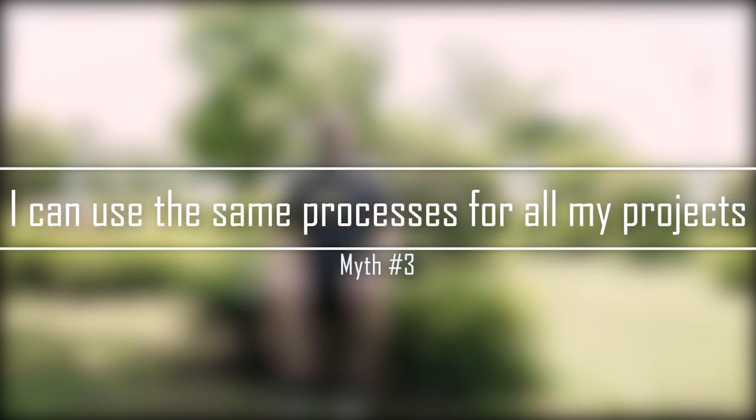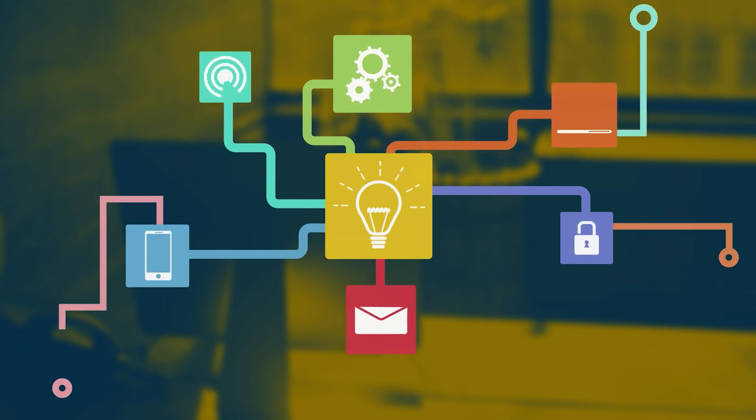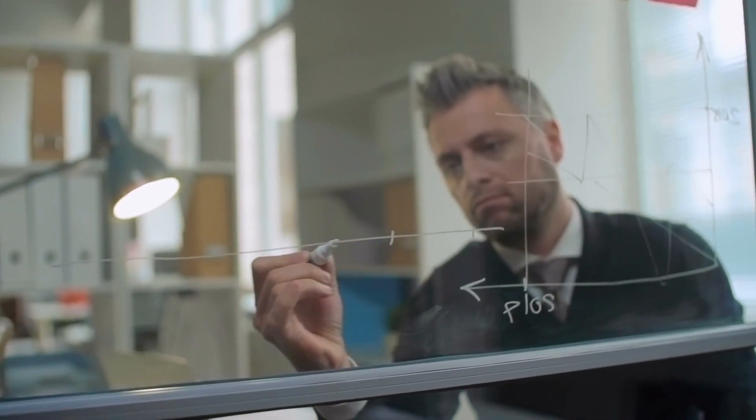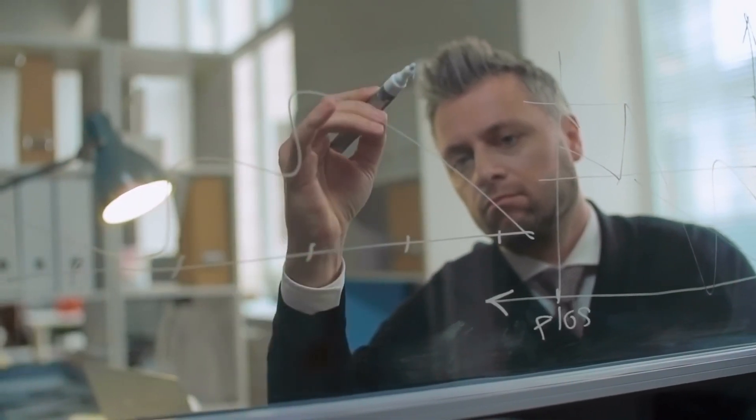Myth number three: I can use the same processes for all my projects and teams. While this can be true in some contexts, it usually is not. You can and should reuse some processes, especially around people interactions and collaboration, but the more technical processes may need to differ between projects. For example, one project may need only dev, test, and production environments with frequent deployments, while another may require more stages or less frequent deployment. Similarly, approval requirements can differ — some projects need approvals at various stages, others need none at all. Different projects, different requirements, different processes.